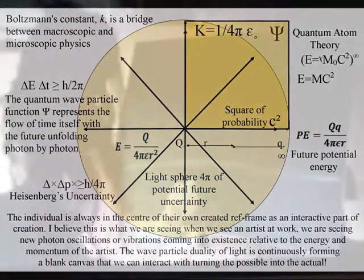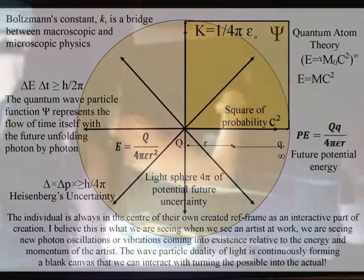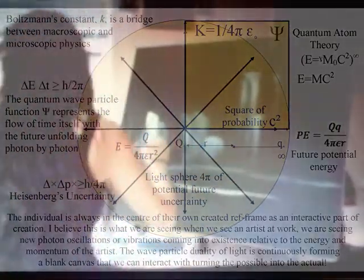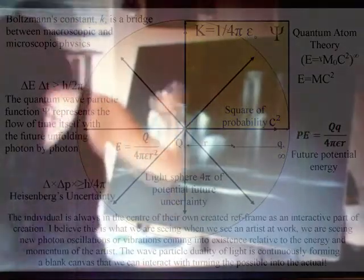In this theory we have free will because the wave-particle duality of light is acting like the bits or zeros and ones of a computer. This forms an interactive process, continuously forming a blank canvas that we can interact with, turning the possible into the actual.